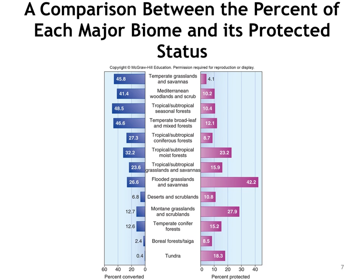This figure compares the percentage of each major biome in protected status. Not surprisingly, there is an inverse relationship between the percentage converted to human use and the percentage protected. Temperate grasslands and savannas, such as the American Midwest, and Mediterranean woodlands and scrub, such as the French Riviera or the coast of Southern California, are highly domesticated and therefore expensive to set aside in large areas. Temperate conifer forests — think of Siberia or Canada's vast expanse of boreal forests — are relatively uninhabited and therefore easy to put into some protected category.